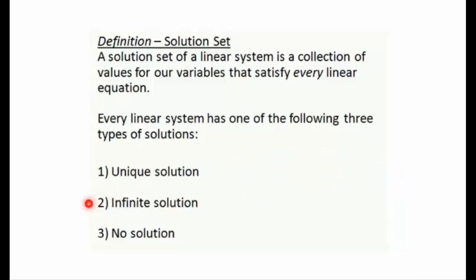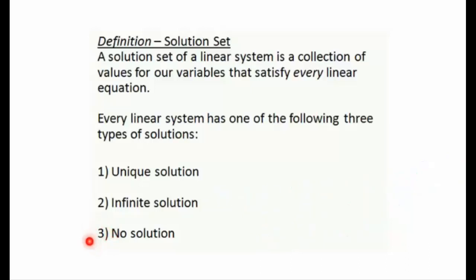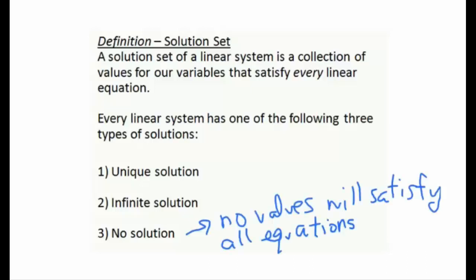The second type is called an infinite solution, where at least one of our variables is allowed to have many values. The last kind is no solution, where we're unable to find a set of values that satisfies every single linear equation at the same time. We may find values that work for one or two equations, but not all of them will be satisfied.